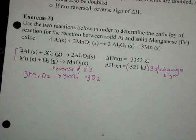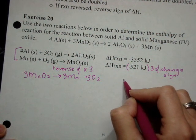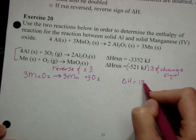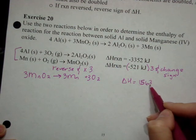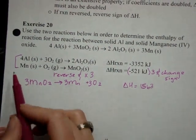So negative 521 becomes 521, and when I multiply that by three, that tells me that the enthalpy for that reaction is now 1563. Times that by three and reverse the sign.